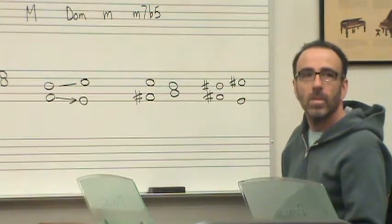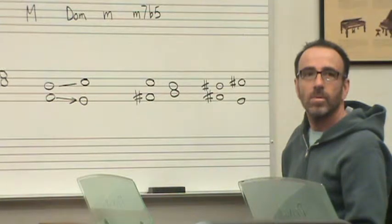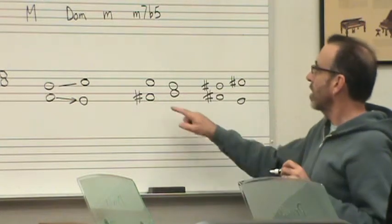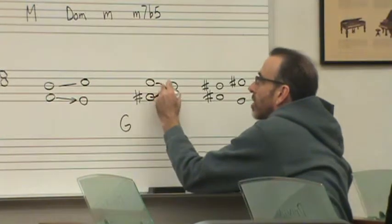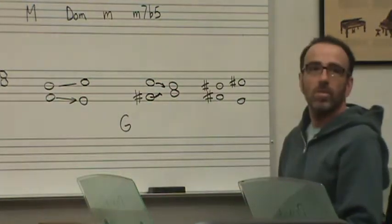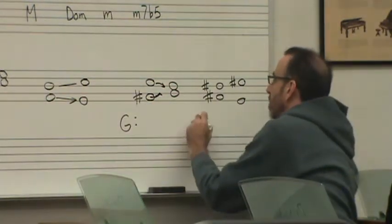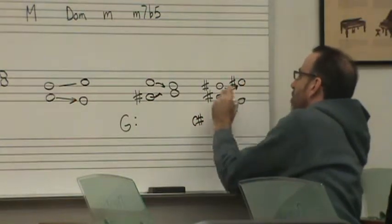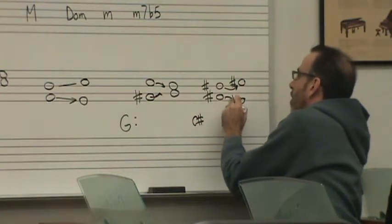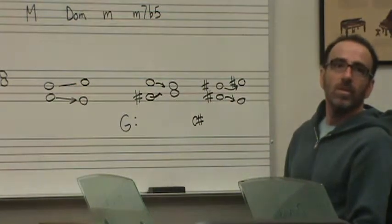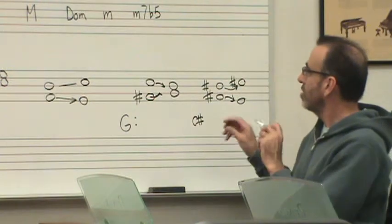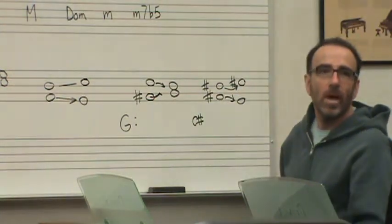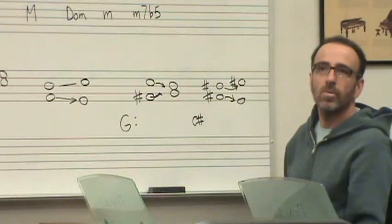So no matter how you put it, you still always put Ti to Do and Fa to Mi? Yeah. So you still want to, well, so when you determine, in the key of G, this would be Ti resolving to Do, and this would be Fa resolving to Mi, right? But in the key of C sharp minor, this would be Ti resolving to Do, and this would be Fa resolving to Mi, see? So depending on how you spell it determines where you're at in the key, how it's going to resolve.